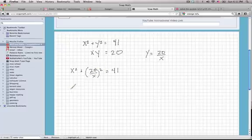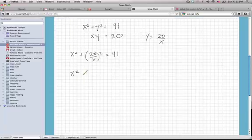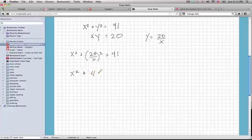Let's go ahead and simplify the squared term. 20 squared is 400, so we have plus 400 over x squared, and that's all equal to 41.